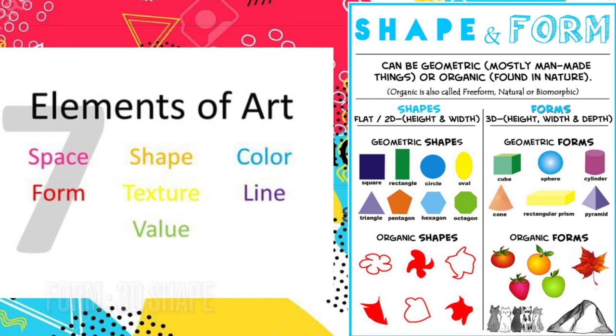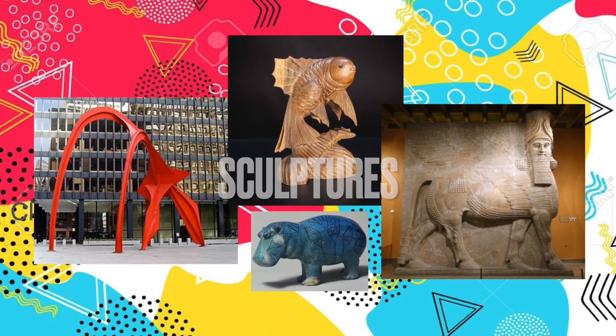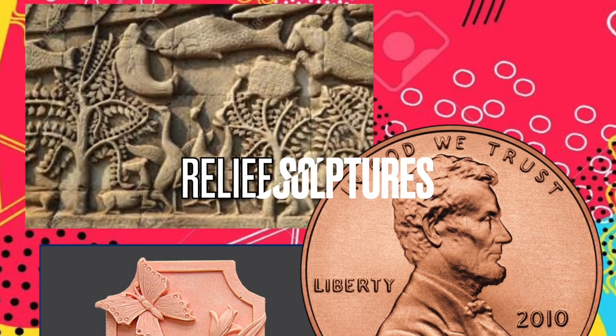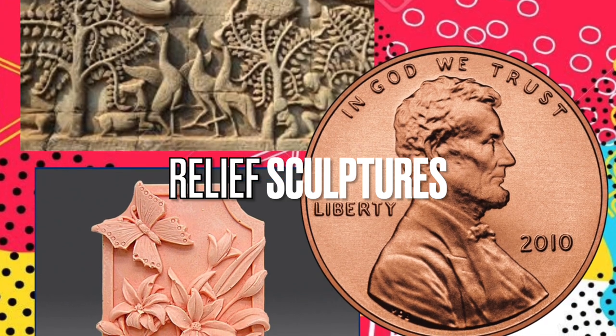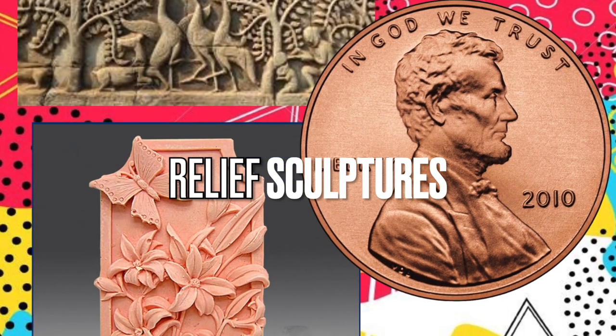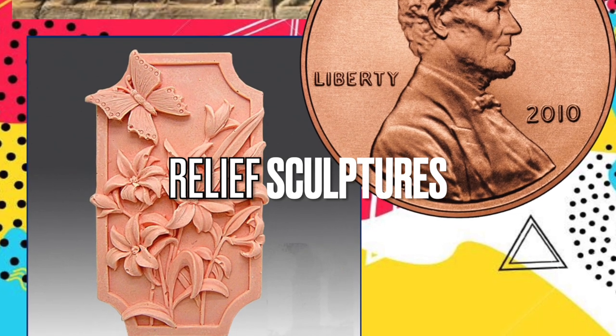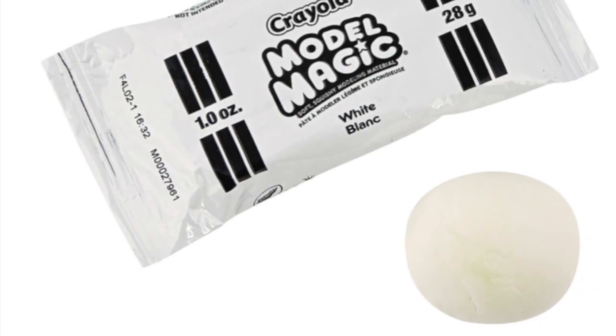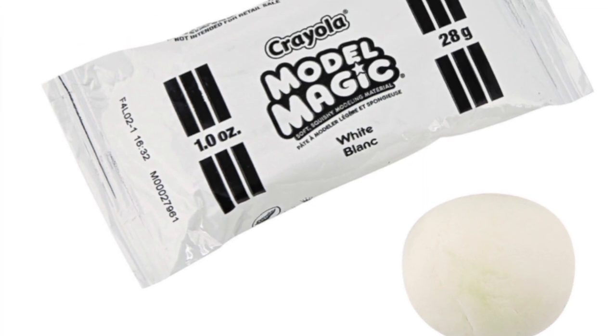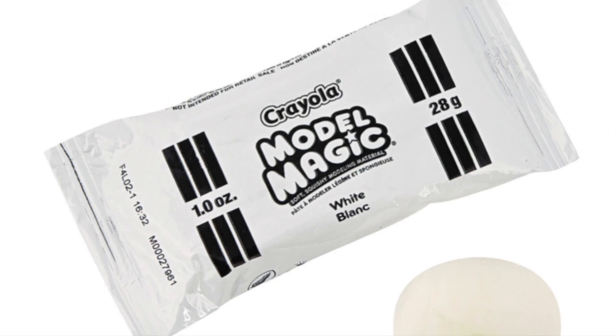Three-dimensional artworks come in the shape of forms called sculptures. Relief sculptures are one-sided sculptures. Reliefs are sculptural artworks that appear as a raised texture above a background plane.